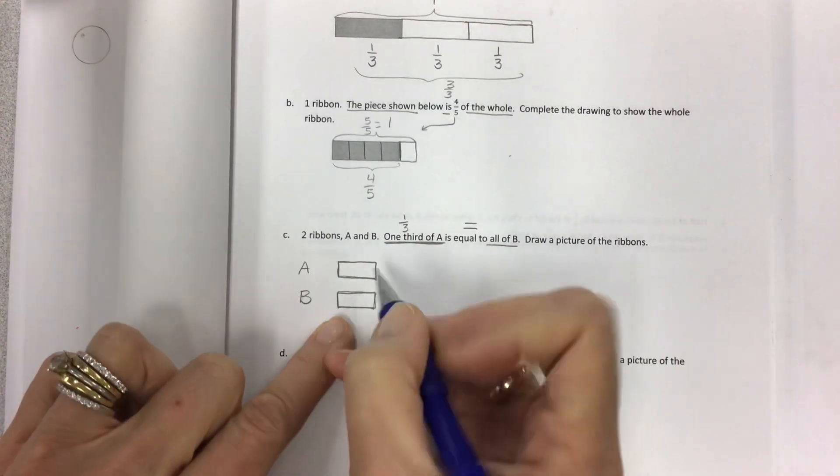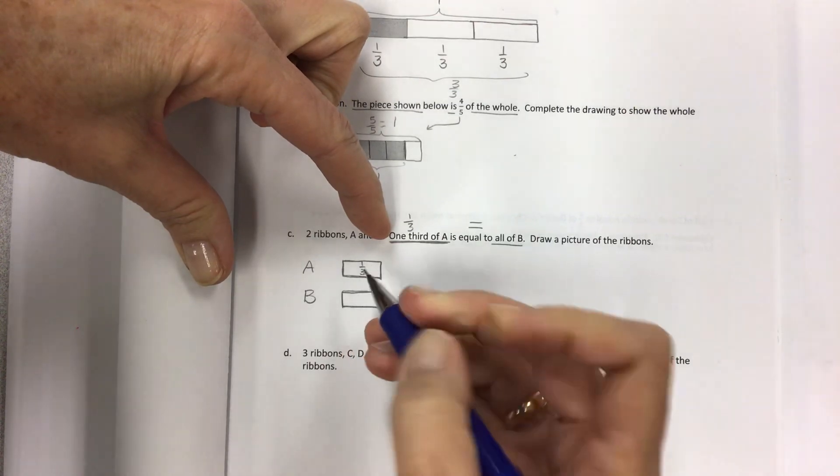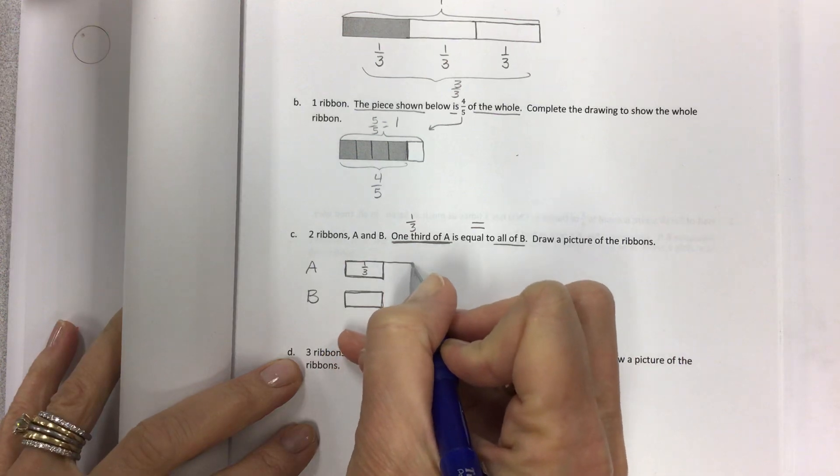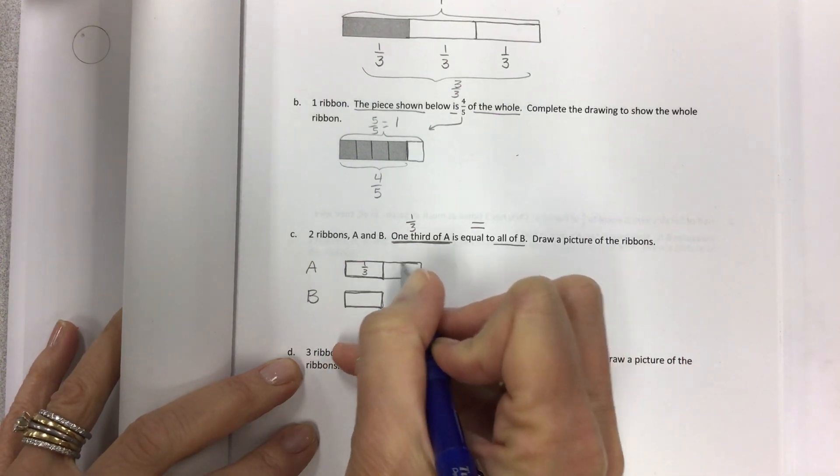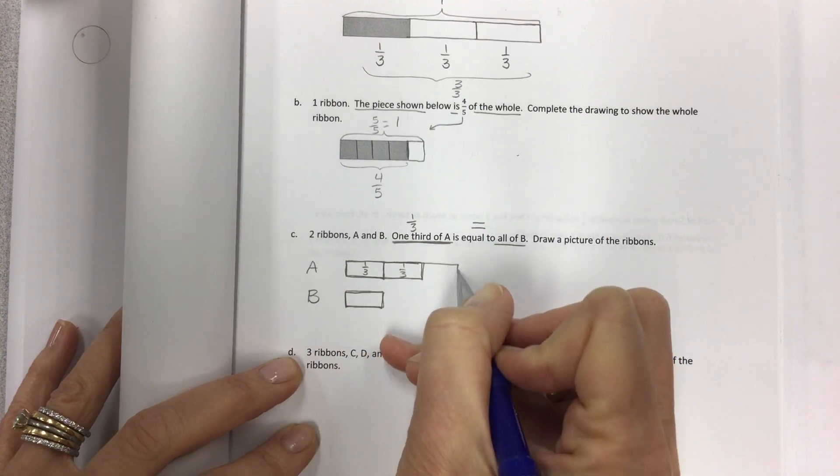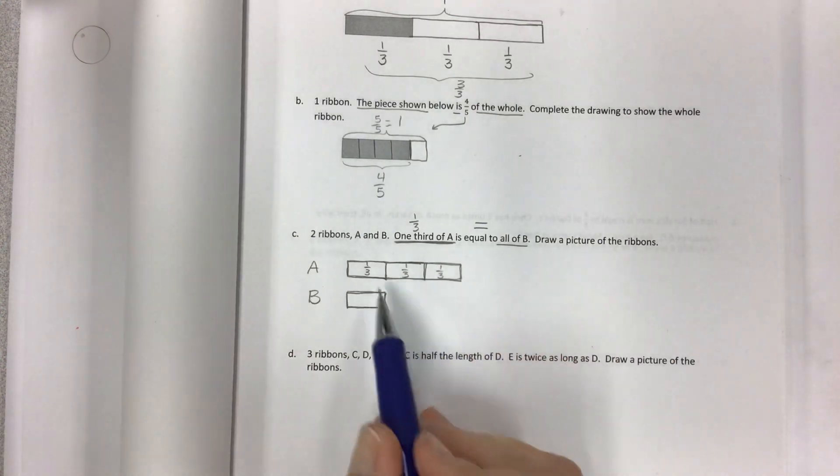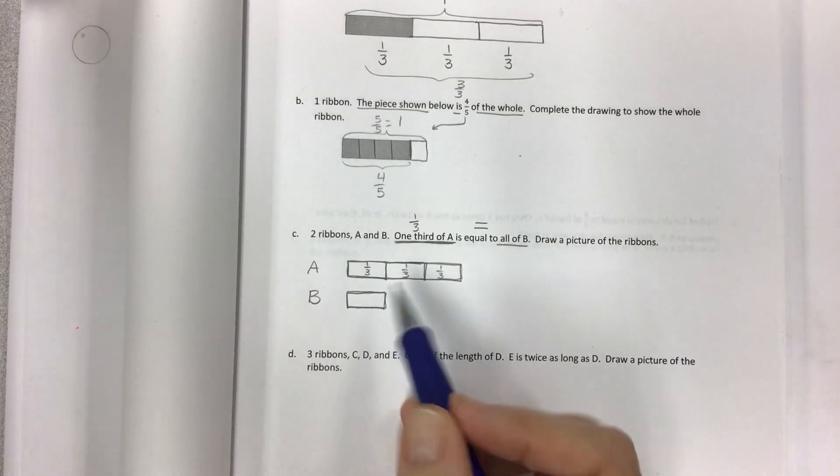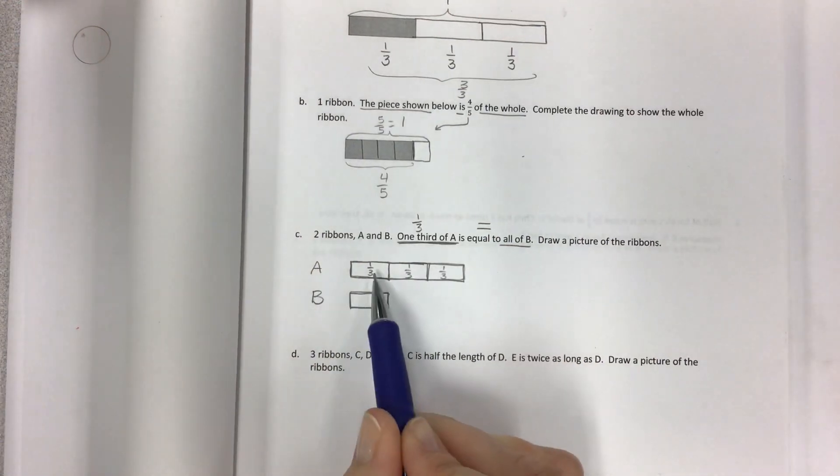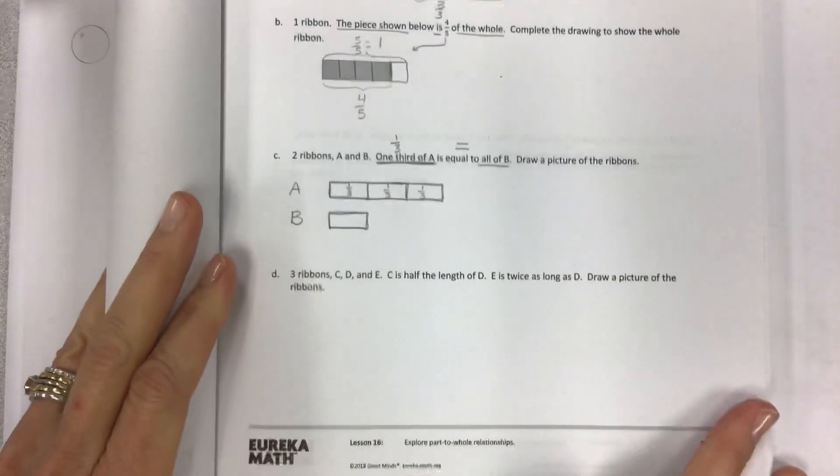If I have this part, and this is one-third, and it's equal to all of B, then what do I have to do for A? I have to extend and draw the second third and the third third. So that when you compare, you have the one-third of A is equal to all of B. Your A ribbon should be three times as long as B.